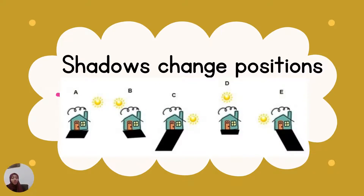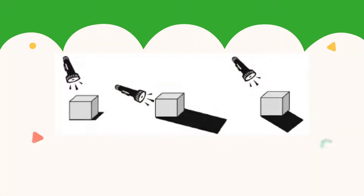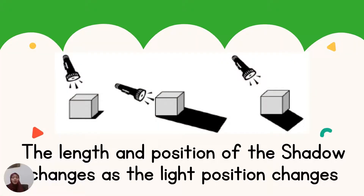Shadows also can change position. When we look at these shadows, we can see the object is the house and the light source is the natural light source, the sun. The house is at the same position, but we can see a change in the shadow that formed — because the light position changed. The length and position of the shadow changed as the light position changed.